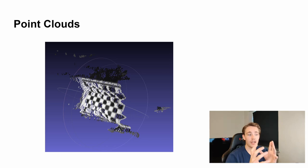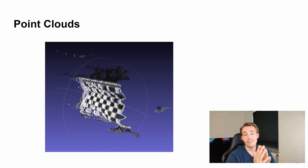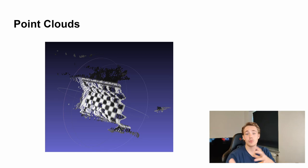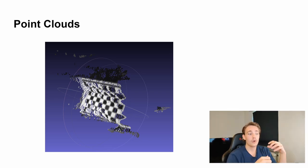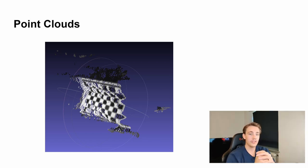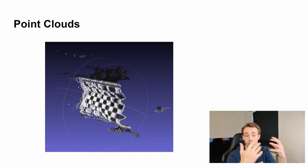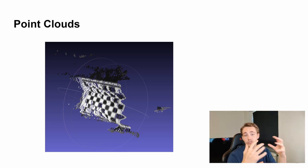Point clouds can be used for a lot of different real-world applications in computer vision. For example, in a pick-and-place system with a robot arm, you need to know where an object is to grab it. You could create a point cloud of the environment or of the object itself, then estimate the pose and distance to it. We'll look into more applications in upcoming videos, so make sure to hit the subscribe button and bell notification.